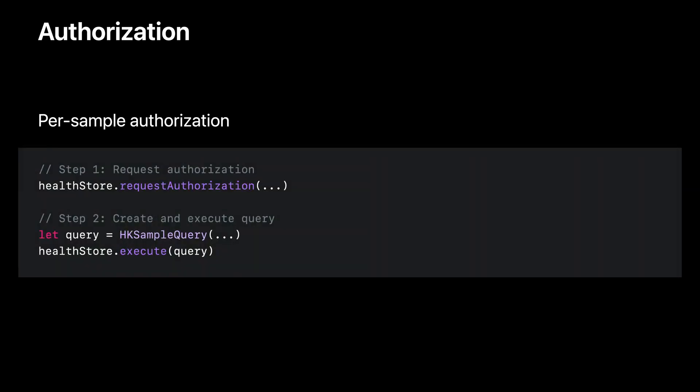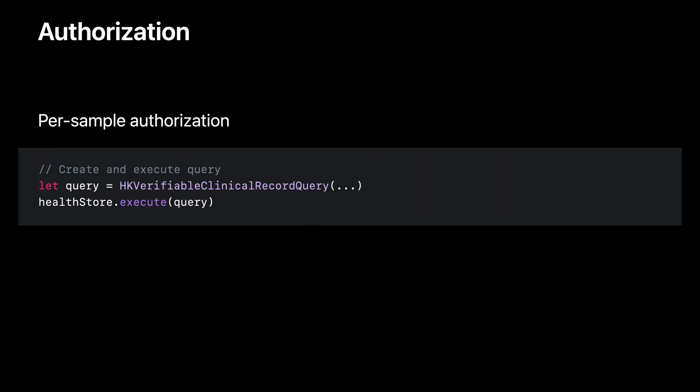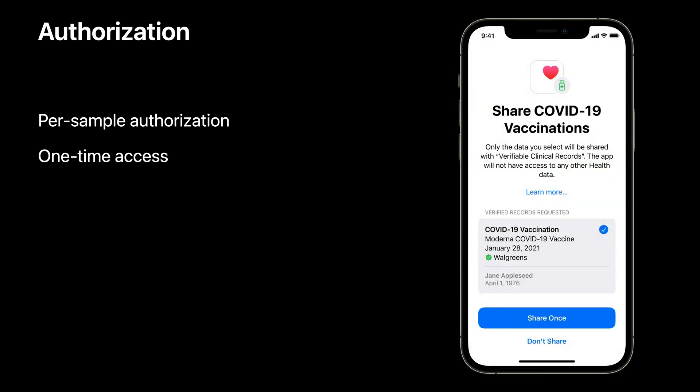The current HealthKit authorization pattern consists of two steps: first requesting user authorization for types to read and share, then querying for samples once authorization is granted. With verifiable health records, this first step is not needed. Instead, once an instance of HKVerifiableClinicalRecordQuery is created and executed, an authorization sheet will be presented, allowing the user to select which individual records to share with your app. After sharing, the chosen records are returned to the query's results handler. Furthermore, authorization for verifiable health records is one-time only — sharing these records with a third-party app does not set up long-term access authorization.